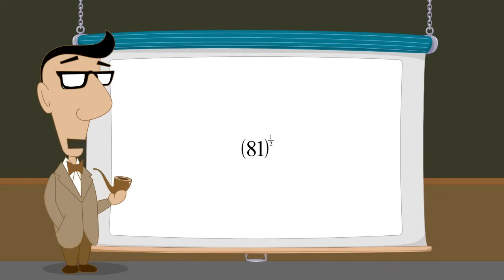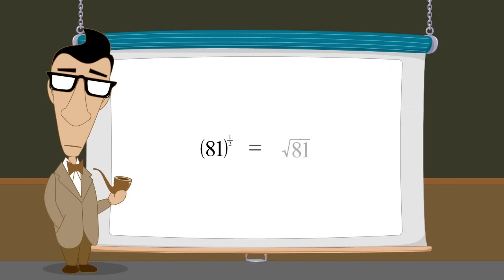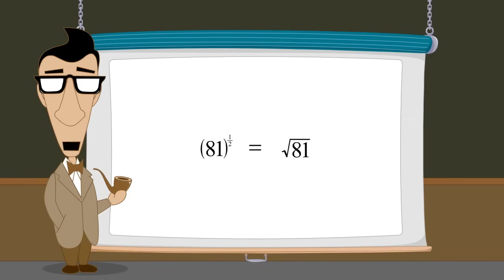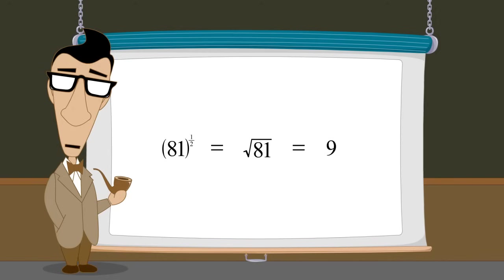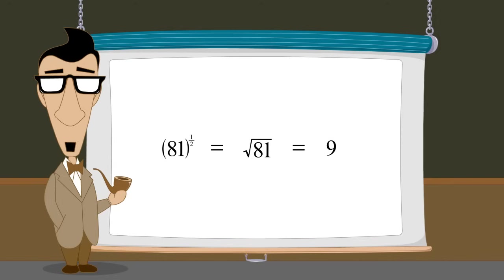So we have seen that roots can be written as exponential expressions using rational exponents, or as radical expressions using a radical sign. We have also seen that these expressions can be simply written as an integer if they are perfect roots. In the next lecture, we will see that these expressions can sometimes be simplified even when they are not perfect roots.